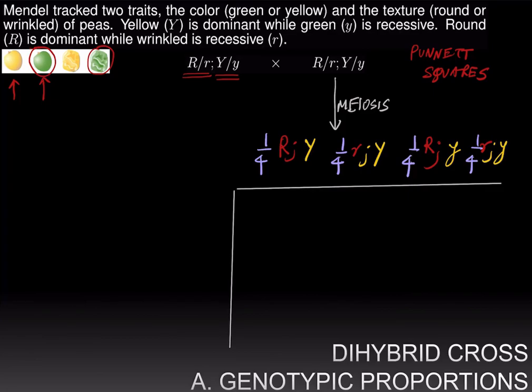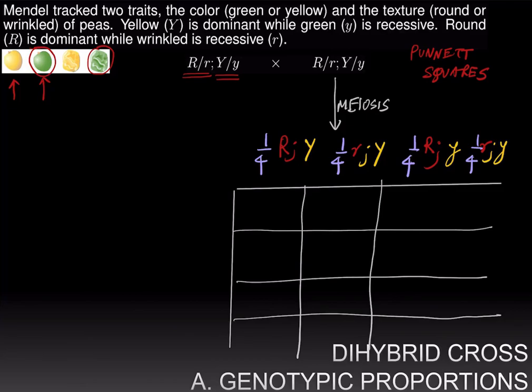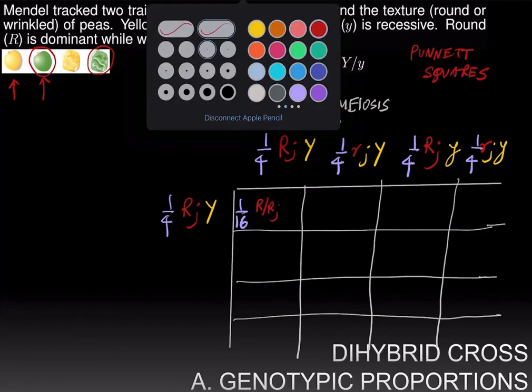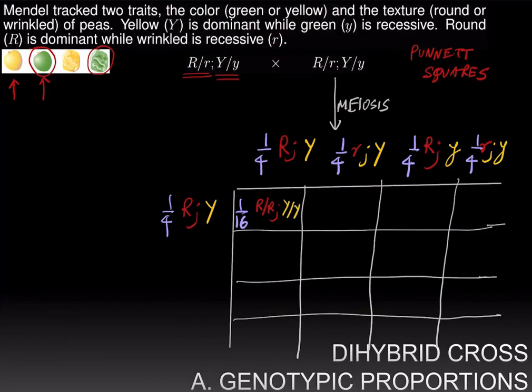And we can go ahead and make a Punnett square, which will have 16 squares, 16 cells, and use the product rule to compute the genotypic proportions. For example, in this first cell, resulting from the fertilization of a big R big Y egg with a big R big Y sperm, I will get, at a frequency of one-sixteenth, a big R big R big Y big Y zygote.